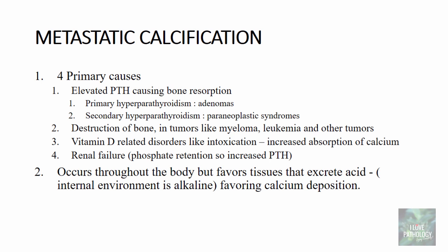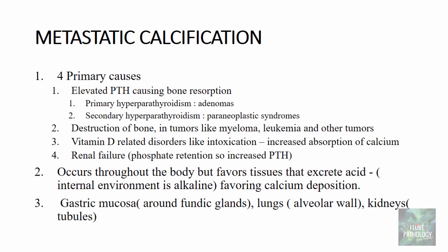Metastatic calcification can occur throughout the body but favors tissues that excrete acid, because when cells excrete acid the internal environment becomes alkaline, and this alkaline environment favors calcium deposition. The organs where you can expect metastatic calcification include the gastric mucosa particularly around the fundic glands, the lungs in the alveolar wall, and the tubules of the kidneys.